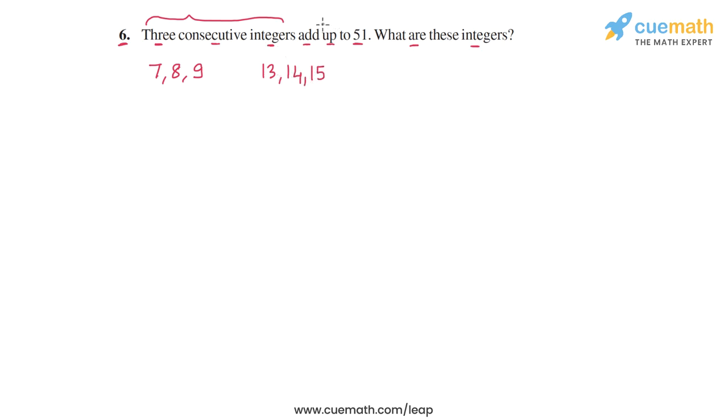But we have to find three consecutive integers which add up to 51. So what we can do is we can start by assuming the smallest of those integers to be a certain variable.